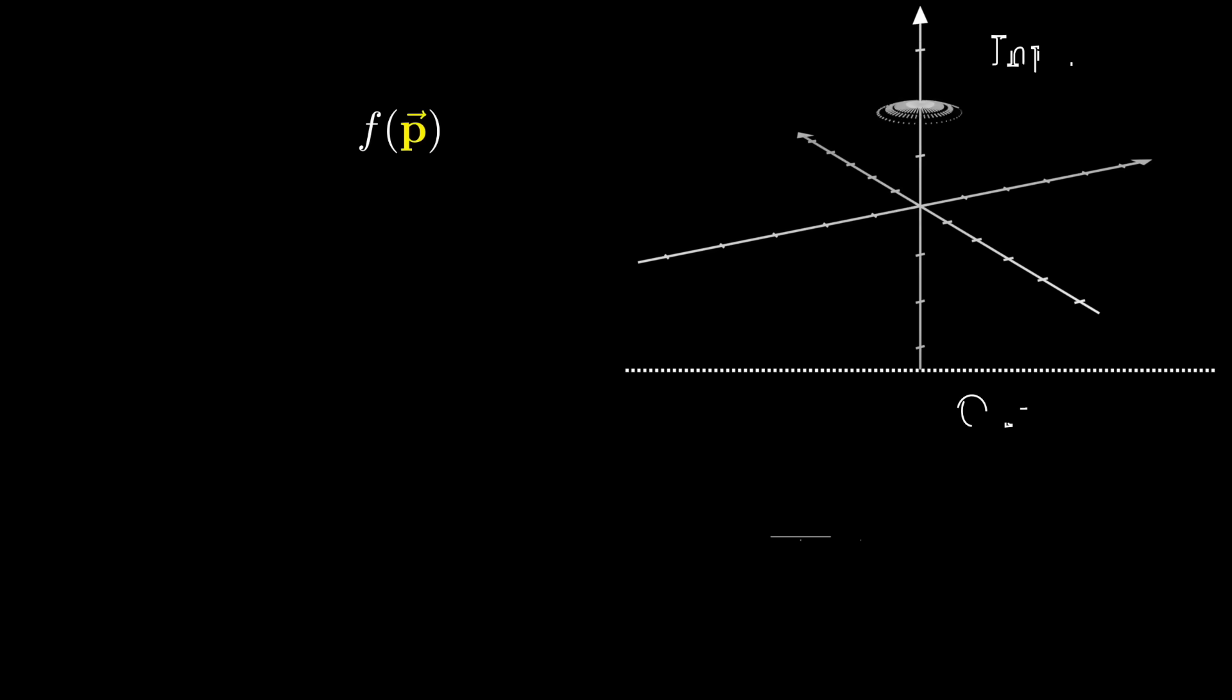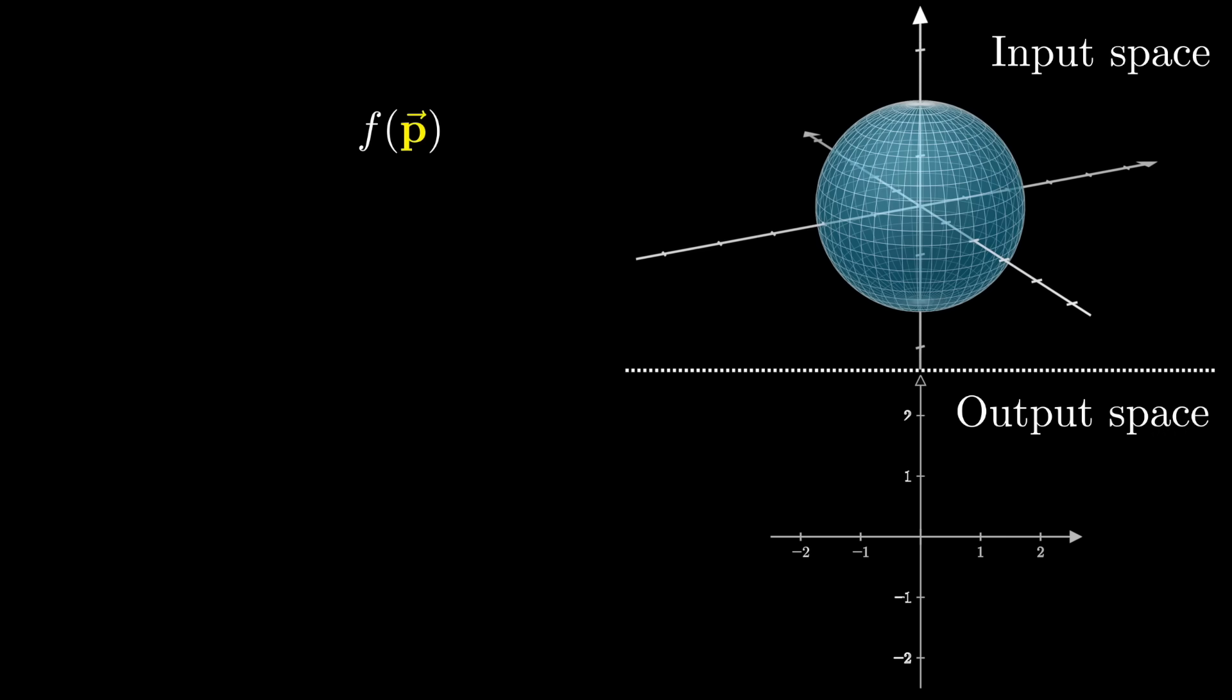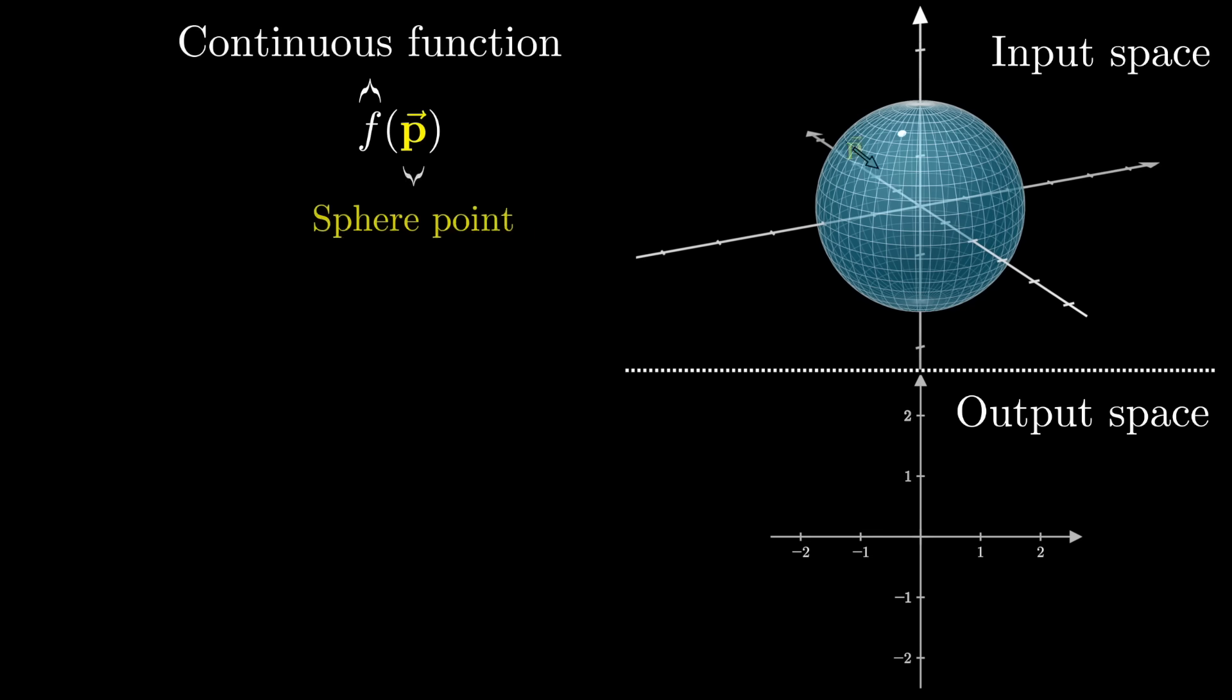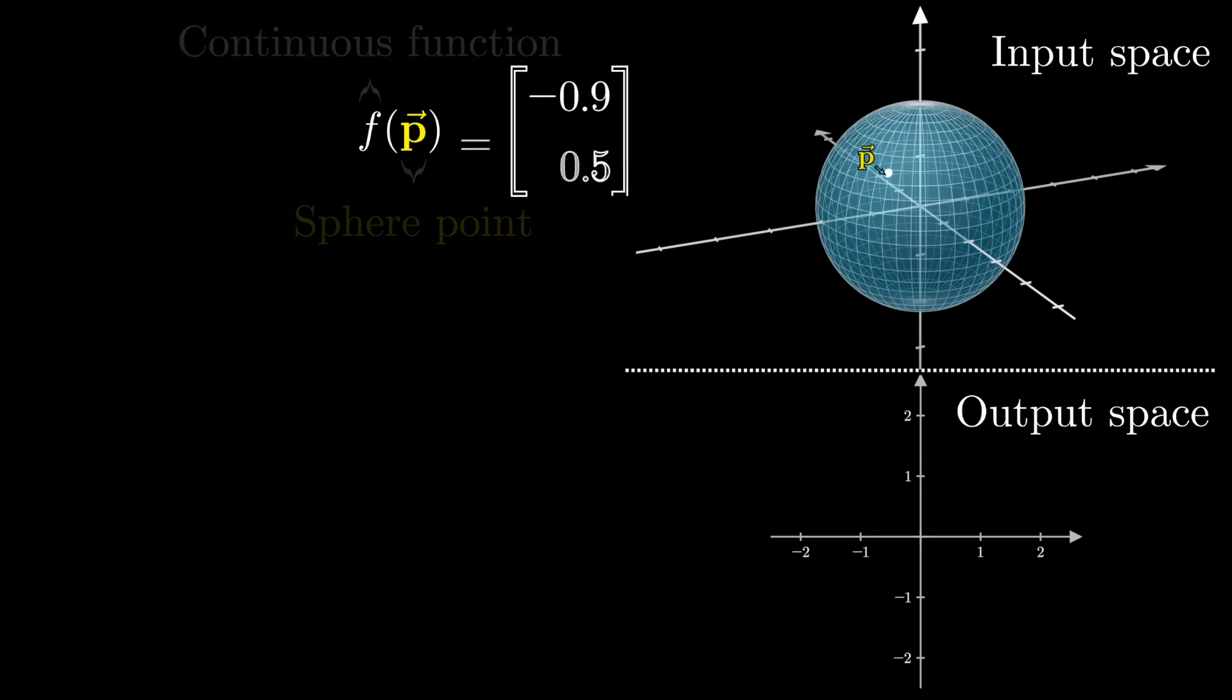First, rephrasing what it is we want to show slightly more symbolically, if you have some function f that takes in a point p of the sphere and spits out some pair of coordinates,